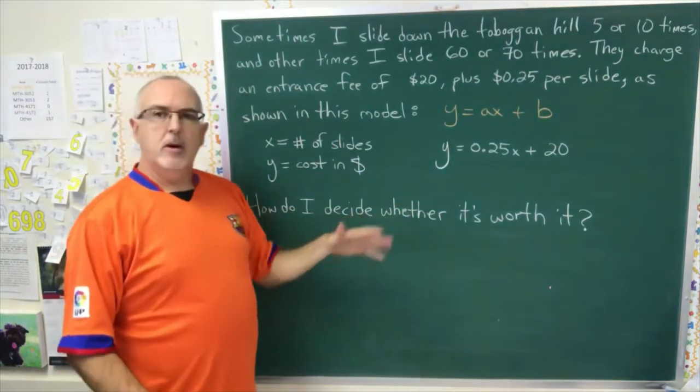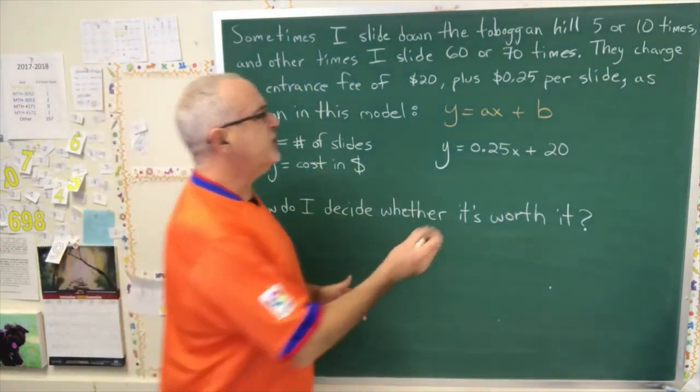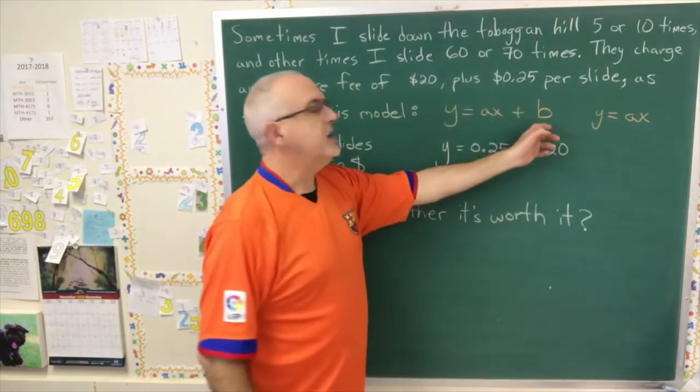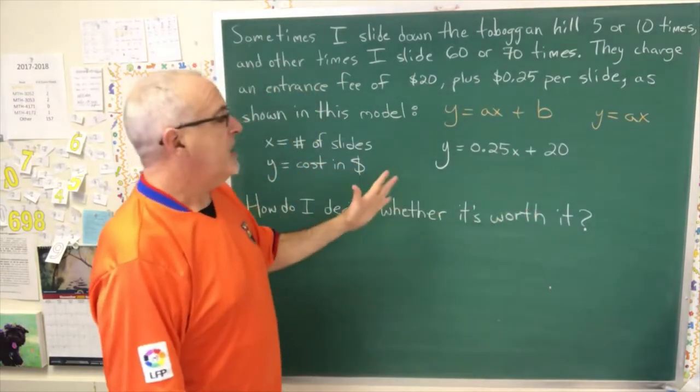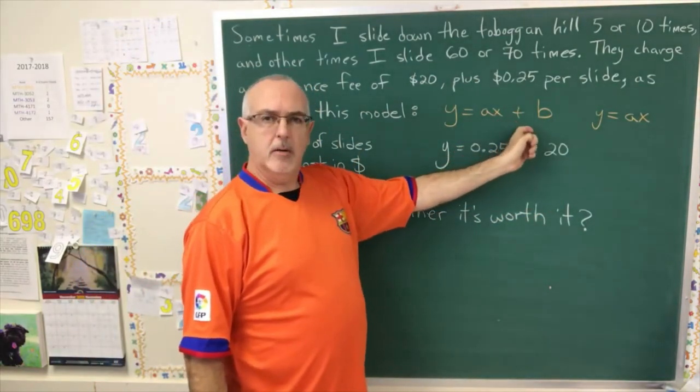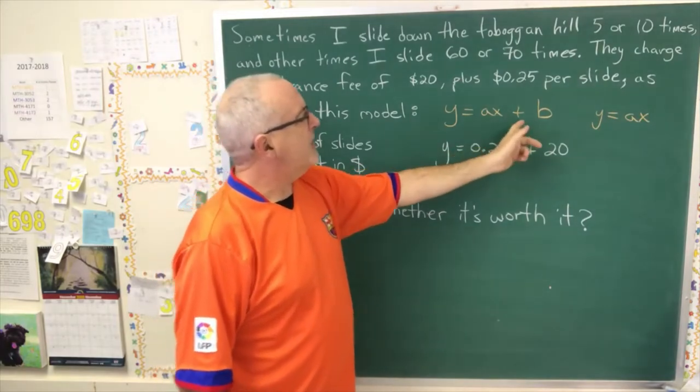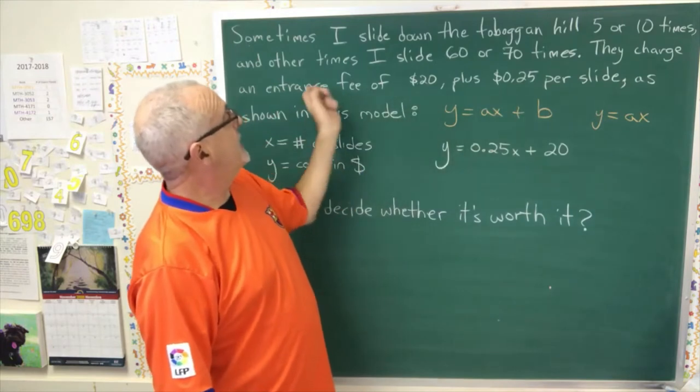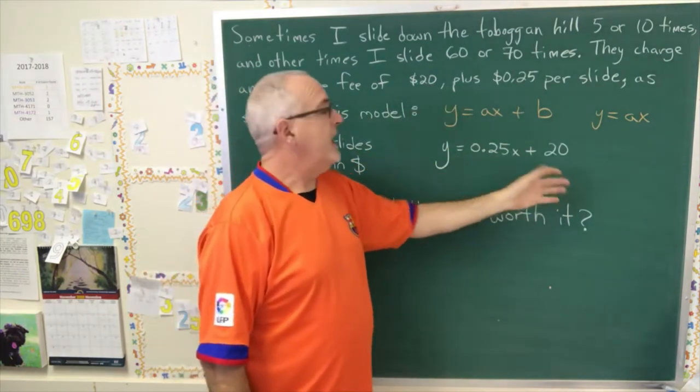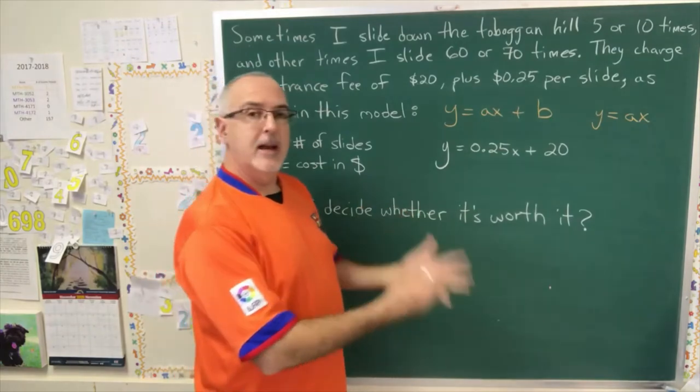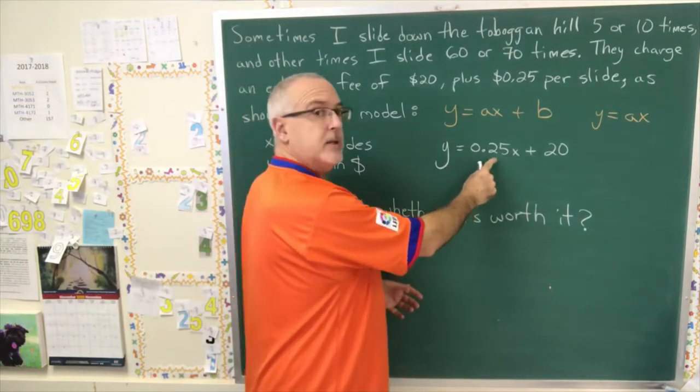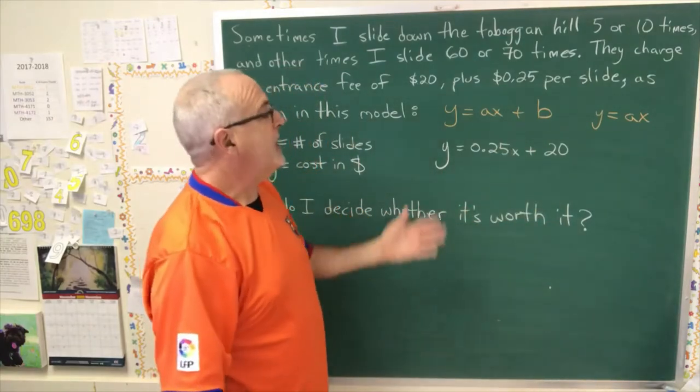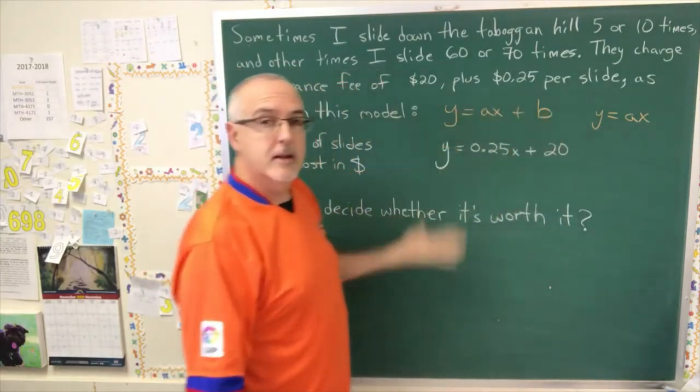Now, in the Math 2101 book, the student usually is working with a model in the form y equals ax, and there is no plus b. But the book does also introduce us to this model. Now, this model has the b being that entrance fee of $20. And how much you pay is a combination of the cost per slide times the number of slides plus the entrance fee. That's the only difference between the two models in this situation.